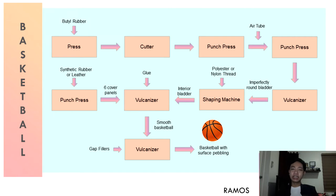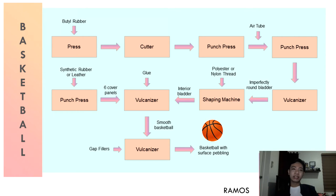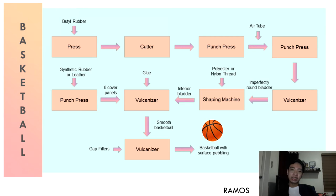We have now completed the interior bladder of the ball, but we still need to make the cover. Synthetic rubber or leather is sent into a punch press to create six cover panels per ball. The cover panels along with the interior bladder are sent into a vulcanizer; the bladder is coated with glue prior to being placed inside. After this we have a basketball, but with a smooth surface. The ball is inspected for gaps between panels, gap fillers are used if needed, and the ball is sent to a specially molded vulcanizer to produce a pebble-like surface. The basketballs are then stored for an additional 24 hours to test if they can hold air.